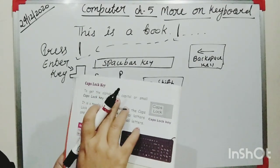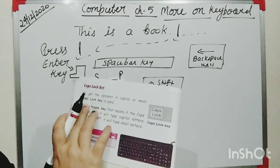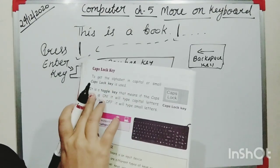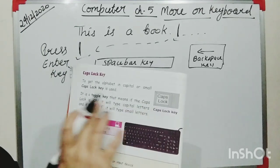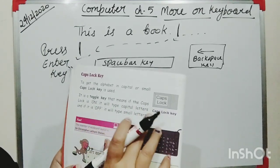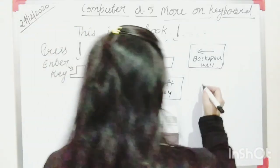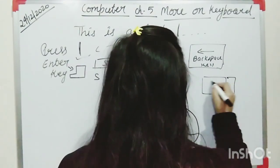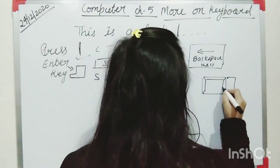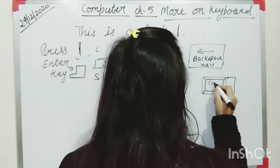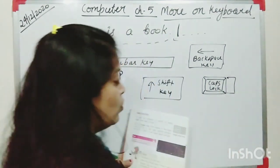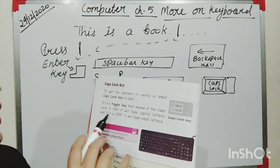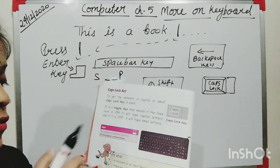Next is the Caps Lock key. To get alphabets in capital or small, you use the Caps Lock key. It is a toggle key. That means if Caps Lock is on, it will type capital letters, and if it is off, it will type small letters.